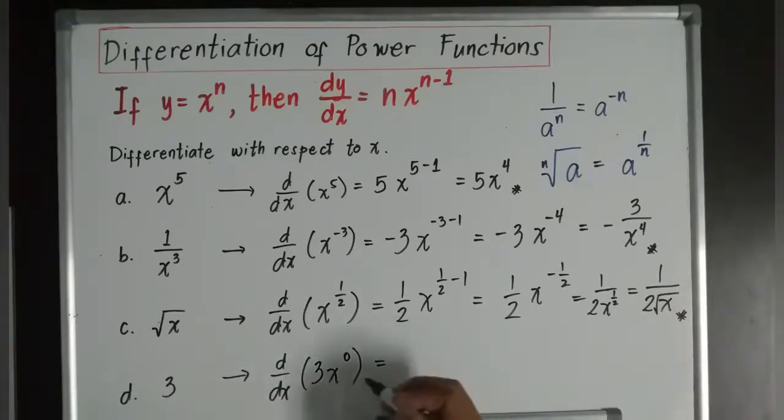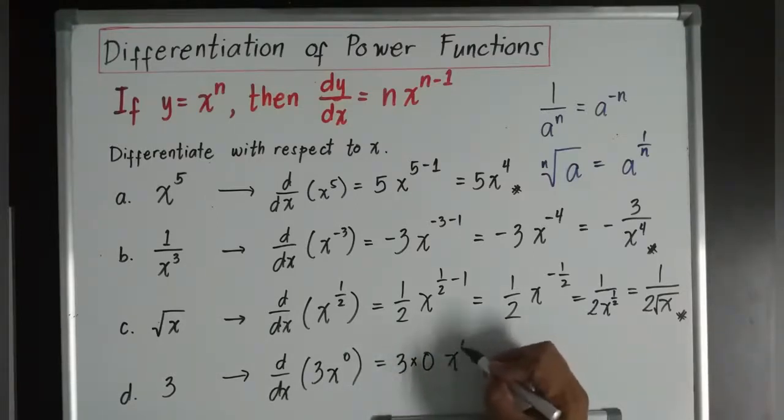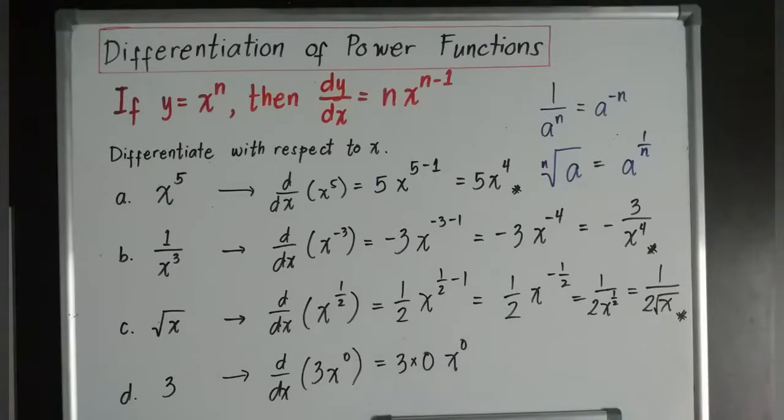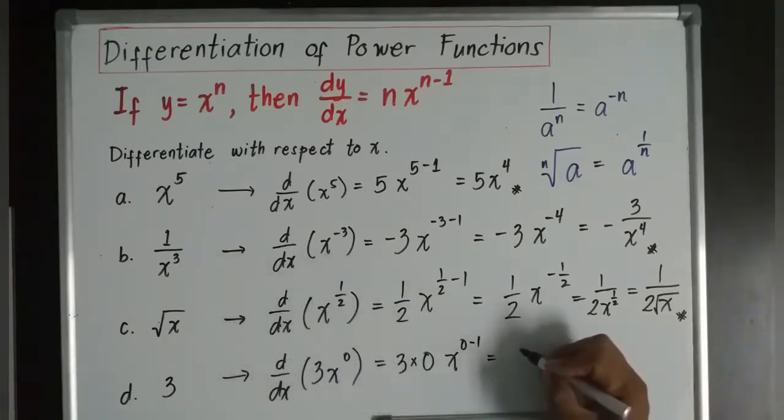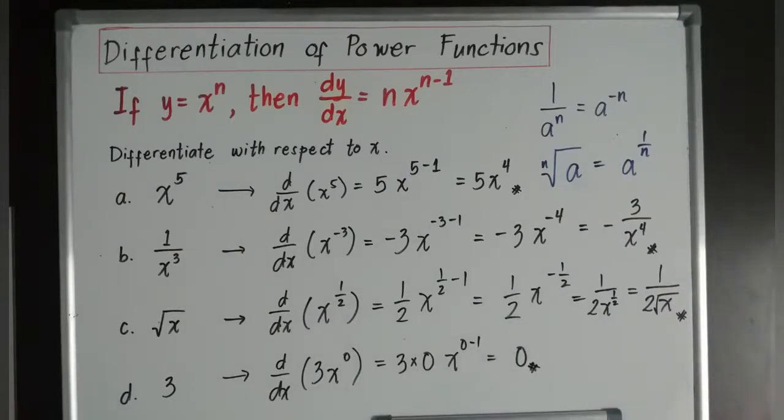So it is equivalent to 3 times 0, this index will be here, 3 times 0, then x to the power of 0 minus 1 is equivalent to, remember, x to the power of negative 1 is 1 over x, but you multiply it to 0, it will still be 0 times 3, it will still be 0. So the answer here is 0. This is the basic concept about differentiation of power functions.